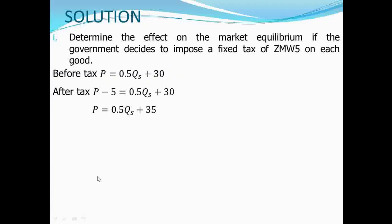By now, this 35 becomes the value on the vertical intercept. If we have to find the value on the horizontal intercept, which is the value of quantity when price is 0, we put 0 where there is P and make QS the subject of the formula. We are going to find negative 70, meaning that our vertical intercept will be 35 while our horizontal intercept will be negative 70.